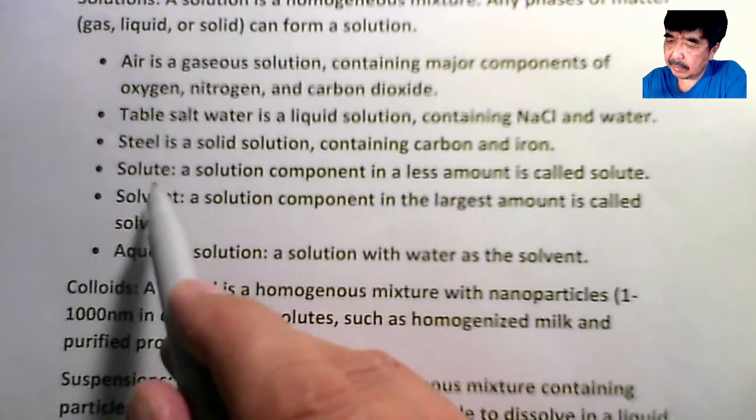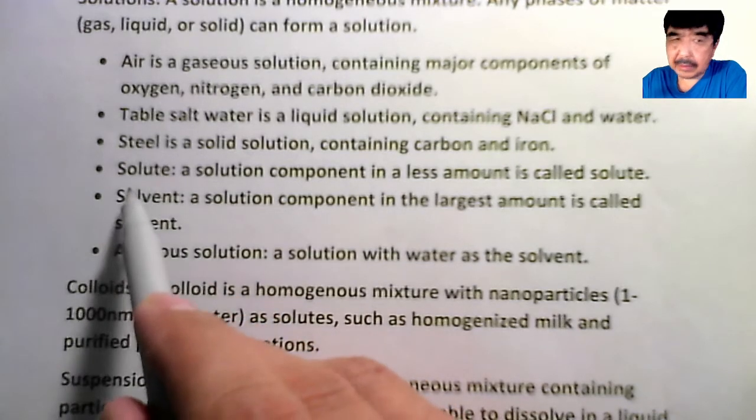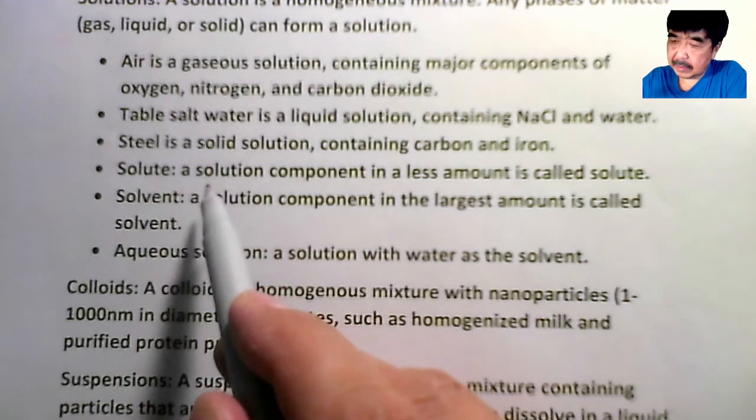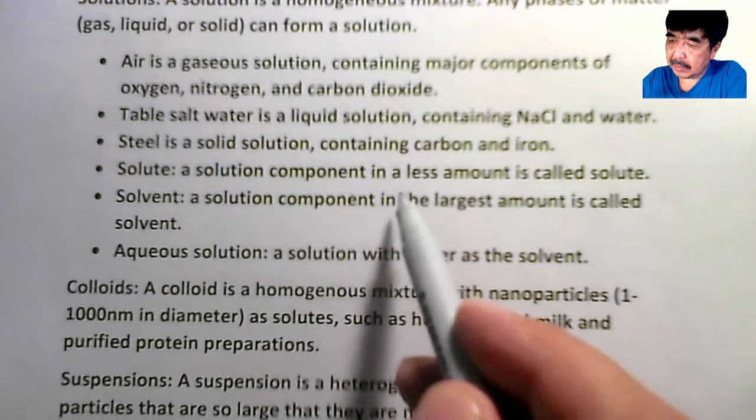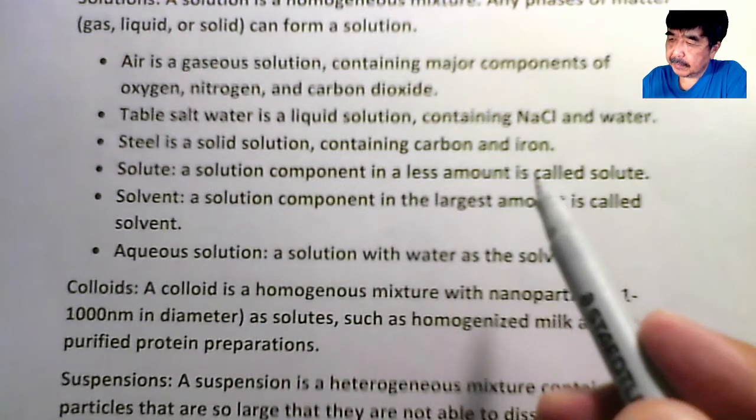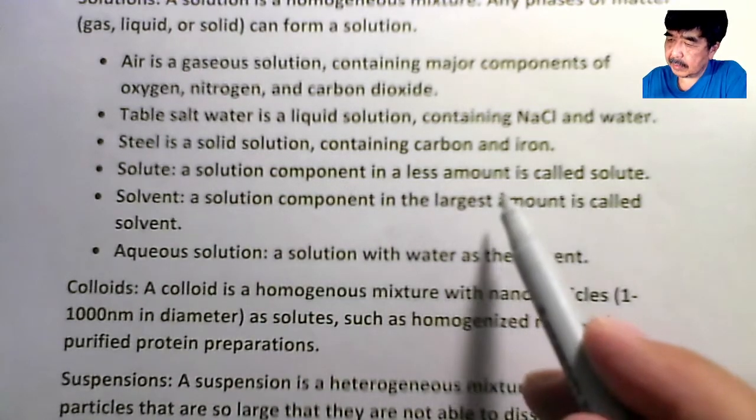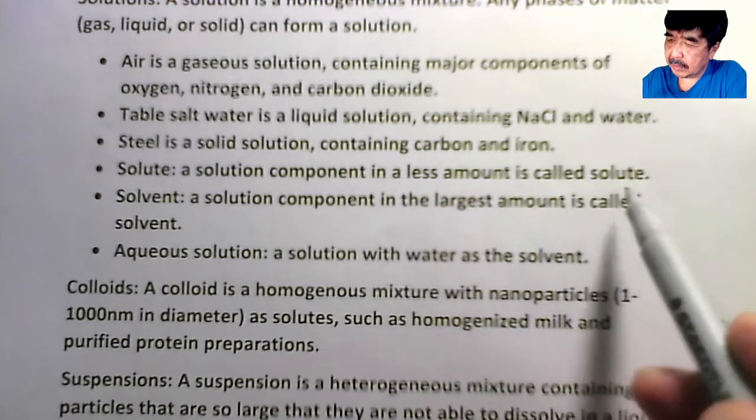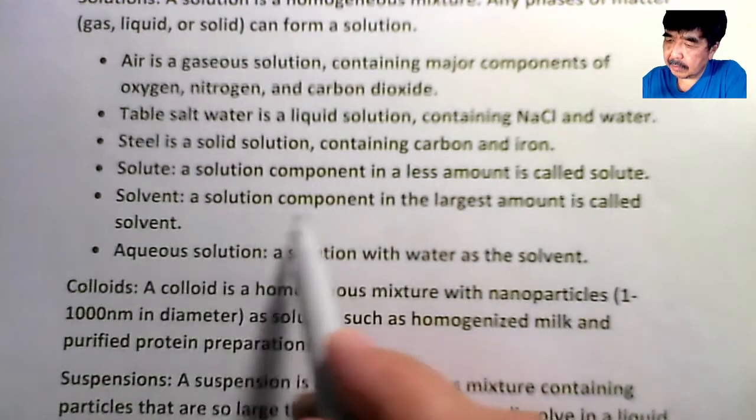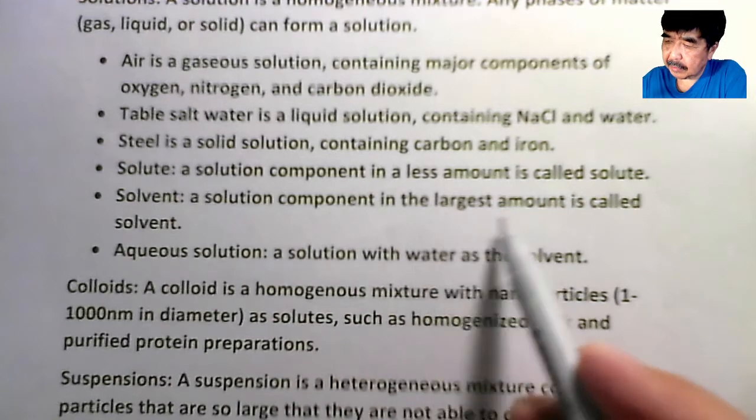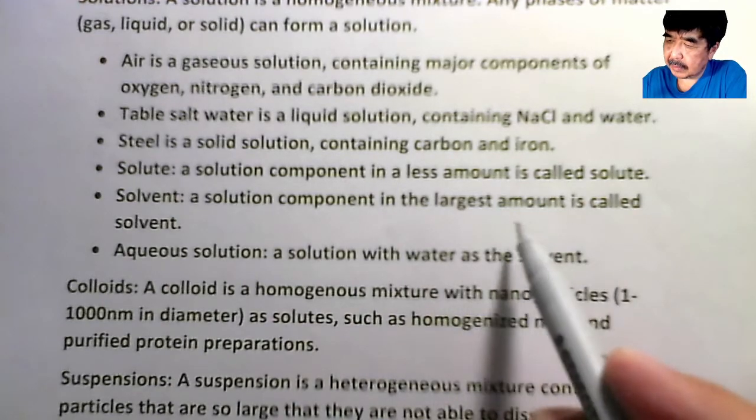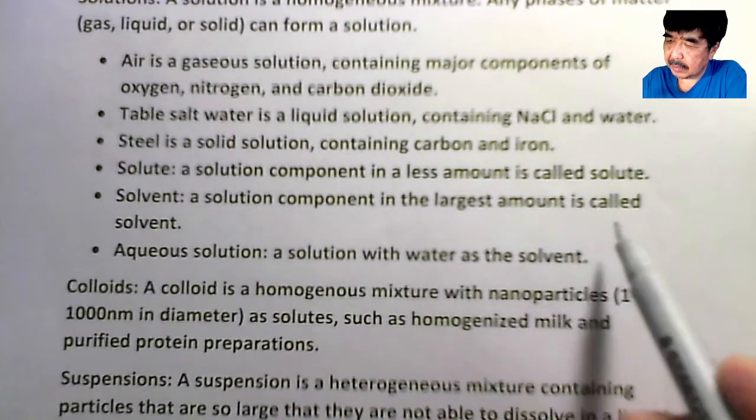Let's take a look at what's the solute and what's the solvent. Solute is a solution component in a less amount. This substance is called solute. A solvent is a solution component in the largest amount. This substance is called solvent.